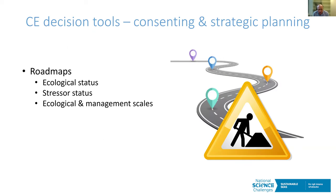This stuff sounds fairly conceptual, but we've generated as part of the challenge a number of roadmaps for how to assess the ecological status of a place using these principles, and another roadmap for assessing the stressor status of a place. These roadmaps act as a how-to guide to apply these principles for your place and situation. With the stressor status roadmap there's also an associated spreadsheet providing a matrix of typical activities in coastal environments, the stresses they generate, and a checklist against whether they are likely to be chronic and accumulating or impact multiple points in the interaction network.